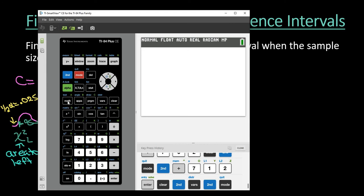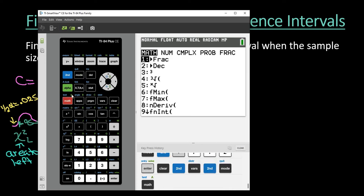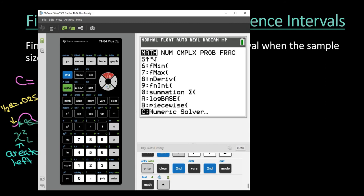What we have to do is we have to solve the equation with using our normal CDF and we're going to solve for x. So if I go into math and under math, if I just hit the up arrow key I would go to C where it says numeric solver and that's what I'm going to select.